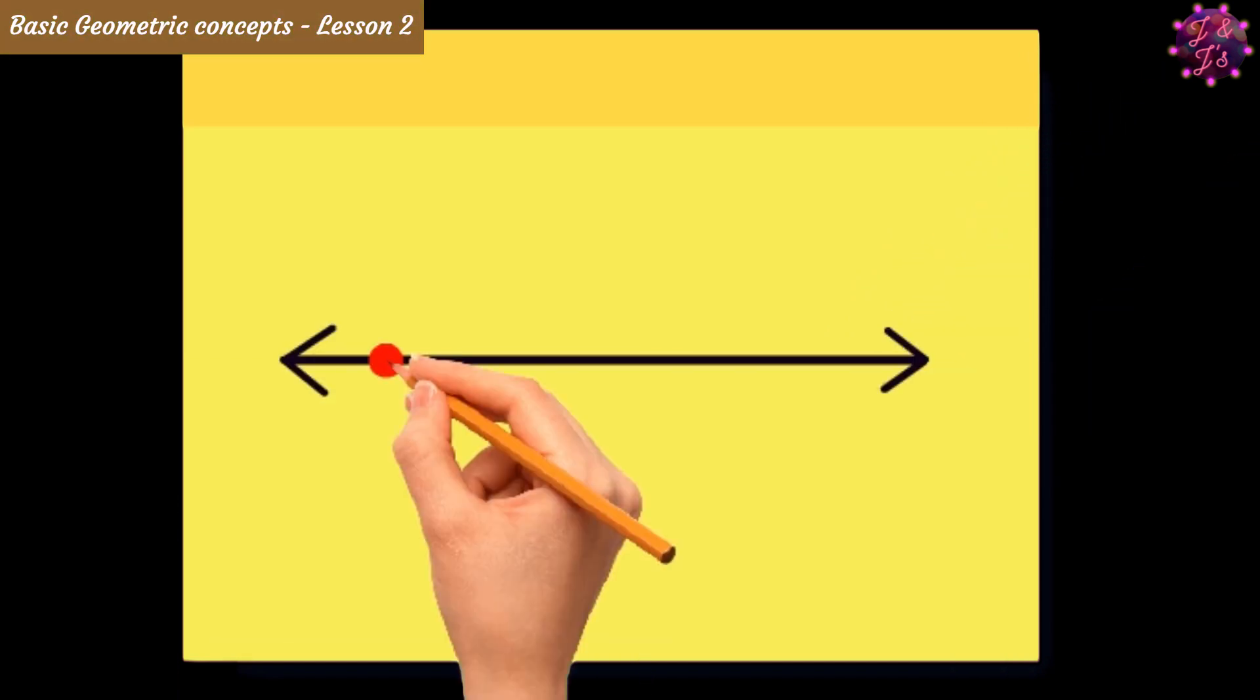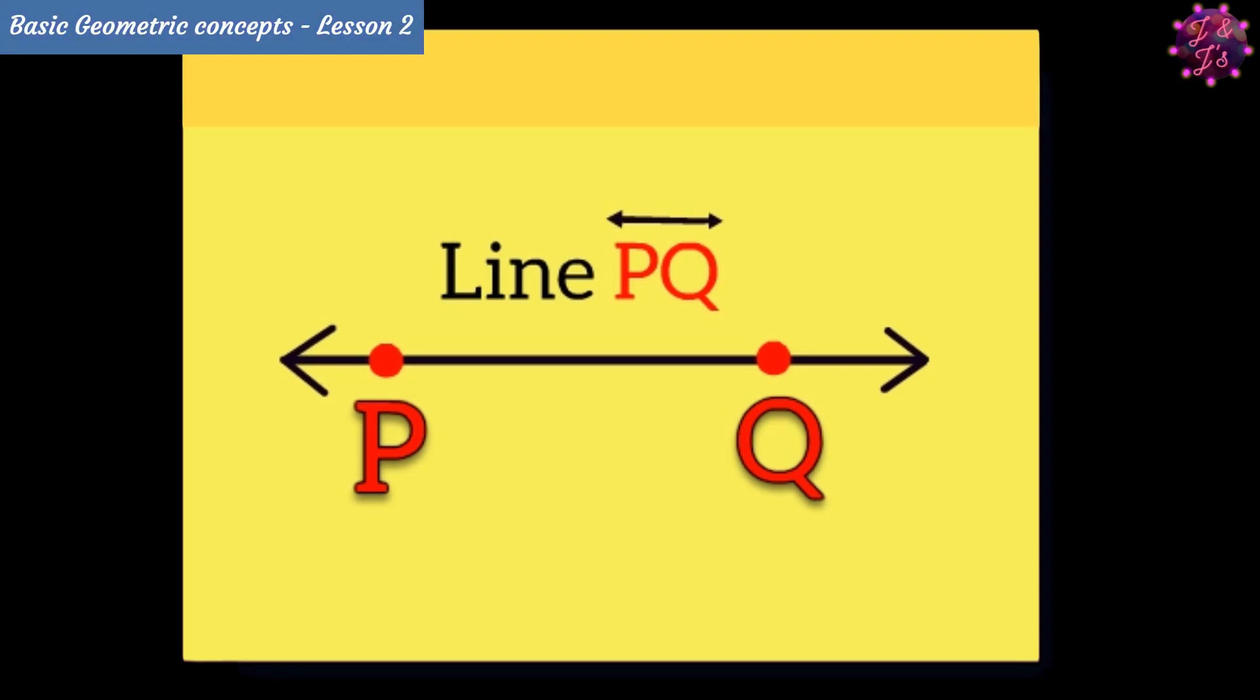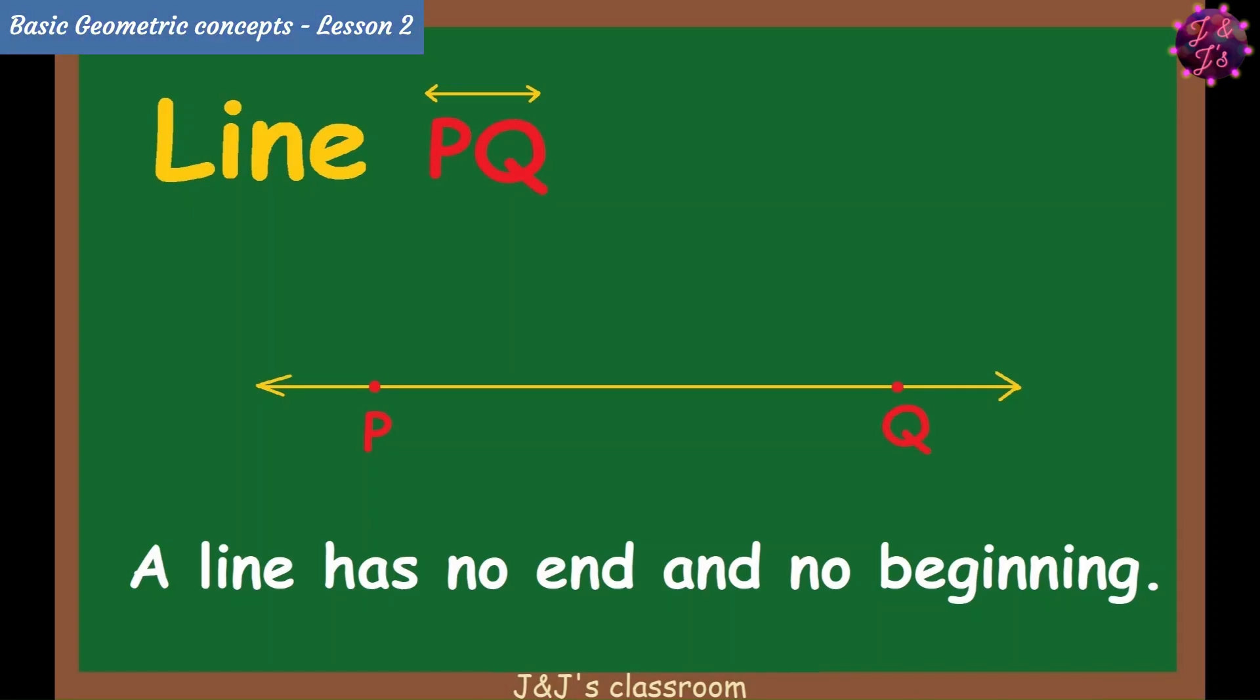Then, please make the points P and Q on the line. And now, this is called line PQ. Do you know guys? A line has no end and no beginning. Okay, next what?